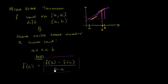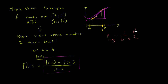When you see this, it might evoke some similarities with the formula for the average value of a function. The average value of a function is going to be equal to one over b minus a — notice you have a b minus a in the denominator — times the definite integral from a to b of f of x dx.